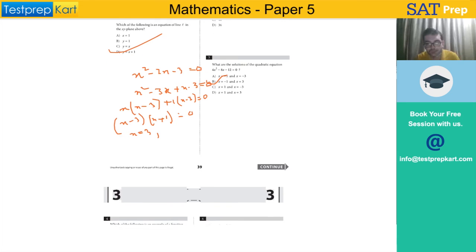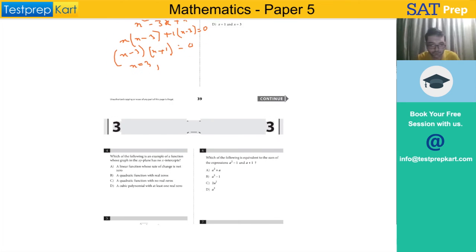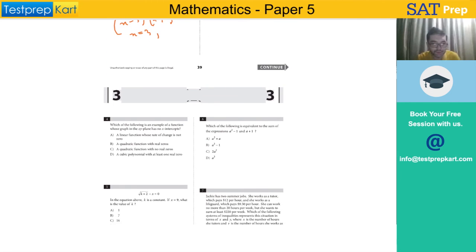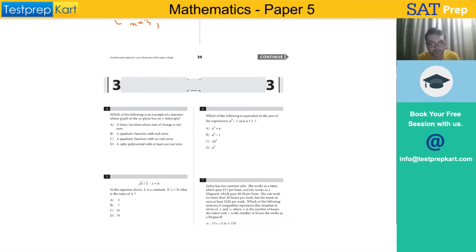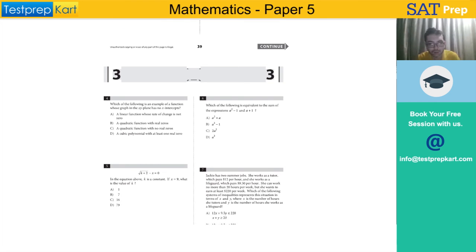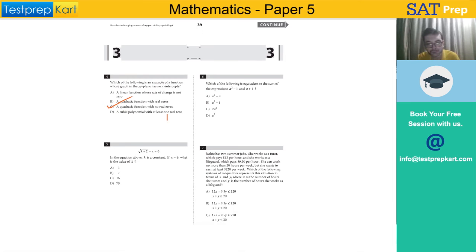Moving forward: Which of the following is an example of a function whose graph in the xy-plane has no intercepts? A quadratic function with real zeros? A quadratic function with no real zeros? A cubic polynomial with at least one real zero? It's a quadratic function with no real zeros - the function would be graphed this way, not cutting the x-axis at any point, so it has no x-intercept.